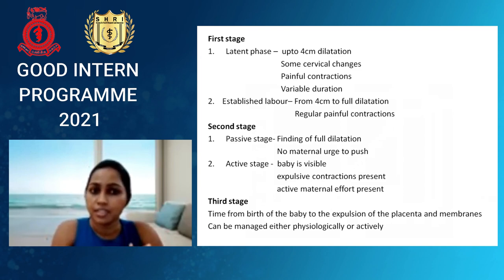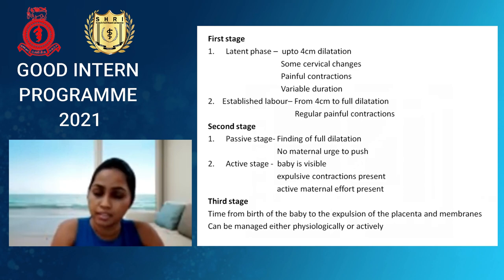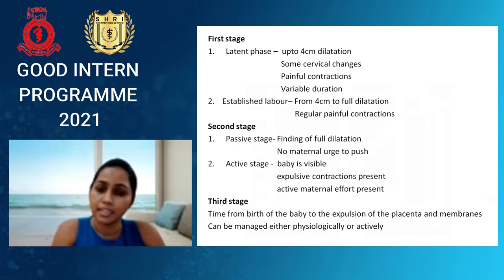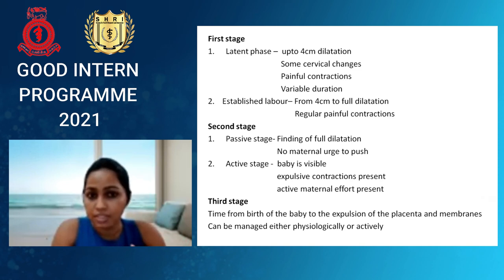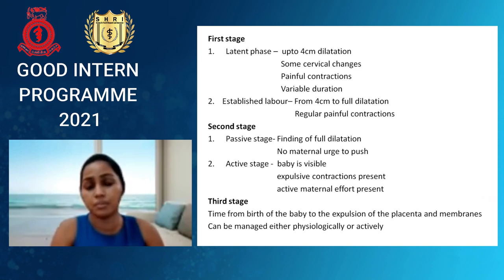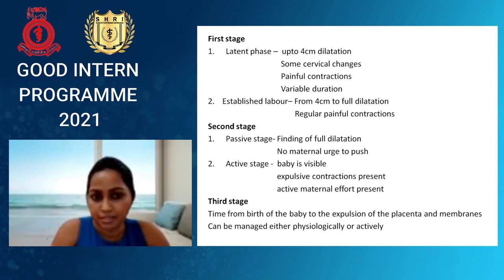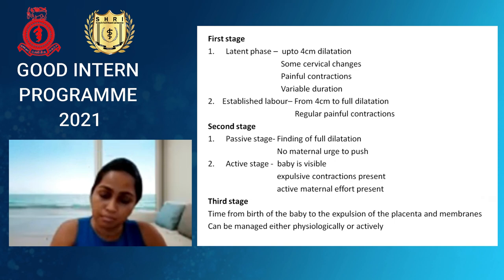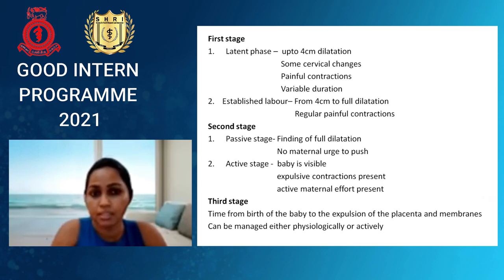The first stage starts with the latent phase — from the onset of labour with painful contractions and gradual changes of the cervix up to four centimetre dilatation. Earlier it was considered as three centimetres, but with the latest guidelines we now consider up to four centimetres. These cervical changes can include effacement and position. The cervix is normally positioned posteriorly, but with labour it moves to a mid position and thins out, becoming incorporated into the lower uterine segment. The latent phase can be of variable duration — in multiparous women it can be very short, but in primigravida mothers it might last for days.